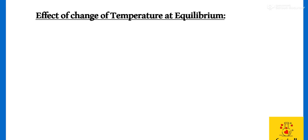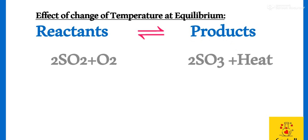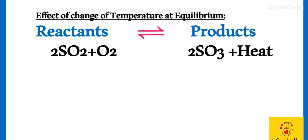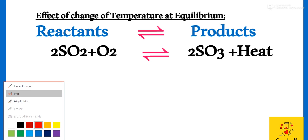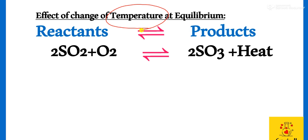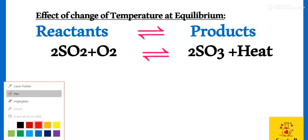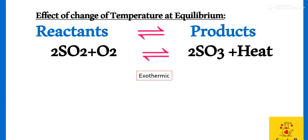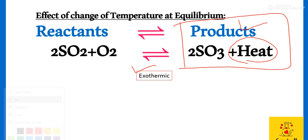The next effect is the effect of change of temperature at equilibrium. Agar humain effect of change in temperature dhekna hai, toh sab se phele humain yeh dhekna ho ga ke reaction itself jho hai woh exothermic reaction hai ya endo. Yahaan par humare paas sulfur trioxide ki formation is a exothermic reaction, aur isme heat produce ho rehi hai. Yeh exothermic reaction hai, or heat produce ho rehi hai, and it is a part of product.